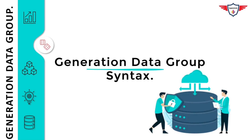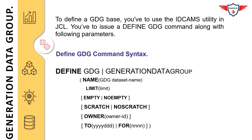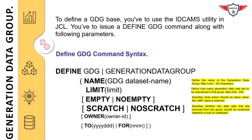Now let's look at Generation Data Group Syntax Detail. To define a GDG base, you use the IDCAMS utility in a JCL and issue a DEFINE GDG command with the following parameters. The syntax begins with the keyword DEFINE followed by GDG or GENERATION DATA GROUP. Then you specify the GDG base name — remember, the name can be at most 35 characters. Then you specify the LIMIT parameter, which defines how many generation data sets are to be maintained in the group. At most, you can have 255 generation data sets in a GDG base. The other two commonly coded parameters are NOEMPTY and SCRATCH.